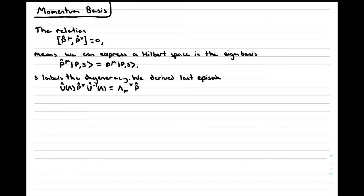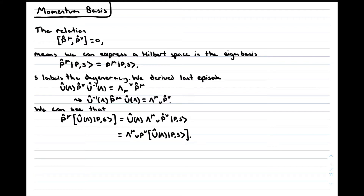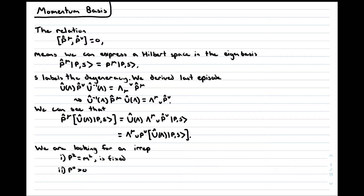Last episode, we derived a relationship for how the four-momentum operators transform under proper orthochronous Lorentz transformations. If we invert this relation, we can consider how the four-momentum operators act on a state after it has undergone such a transformation. For the remainder of this video, when we write Λ, we are only considering proper orthochronous Lorentz transformations. The discrete transformations of parity inversion and time reversal will be considered in a later video. Using this relationship, we can see that a Lorentz-transformed momentum eigenstate is still a four-momentum eigenstate, but with the Lorentz-transformed momentum. Under a proper orthochronous Lorentz transformation, the four-momentum squared and the sign of the time component remain invariant. If our Hilbert space had states with different values of either of these quantities, they wouldn't mix under Lorentz transformations, and therefore we wouldn't have an irreducible representation. So the Hilbert space which transforms under an irreducible representation has a definite value for p², which we identify as the squared mass of the particle it describes.